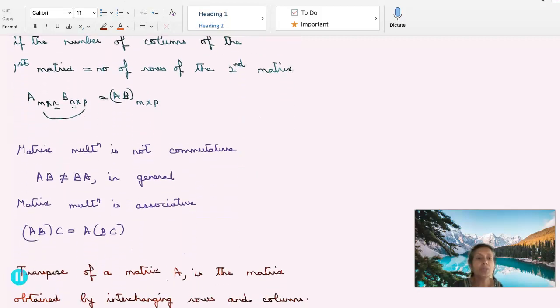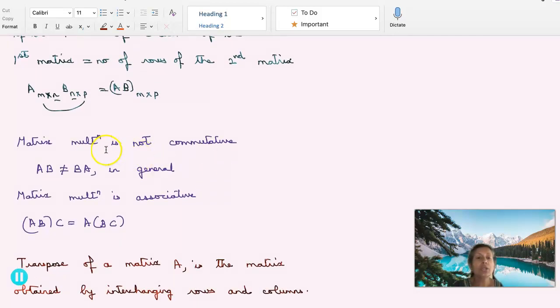Is matrix multiplication commutative? No. In general, matrix multiplication is not commutative. AB not equal to BA in general, but there may be cases where it is commutative. Matrix multiplication is associative. That means AB bracket C equal to A bracket BC.